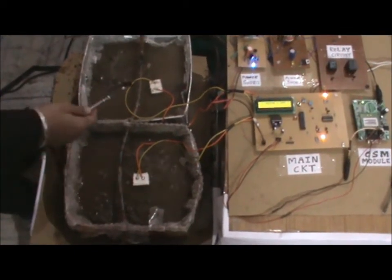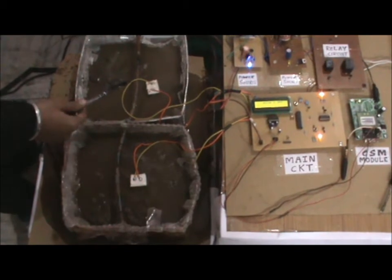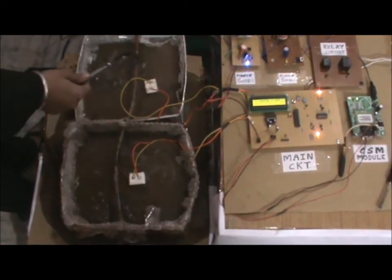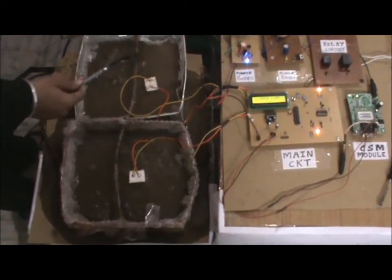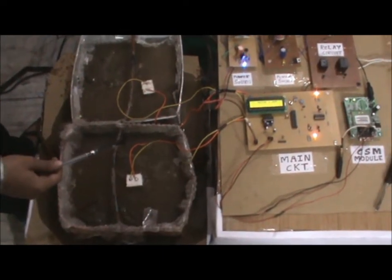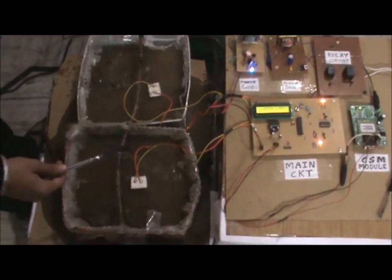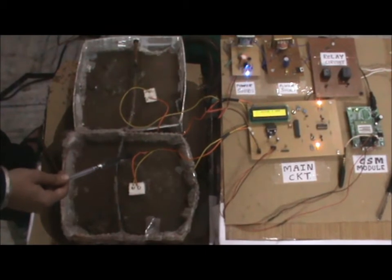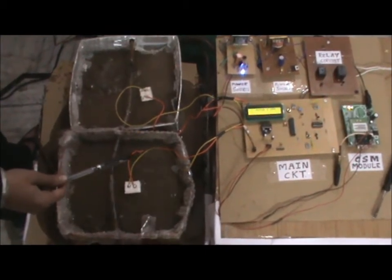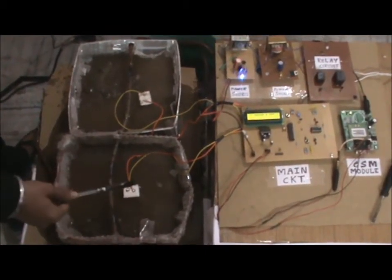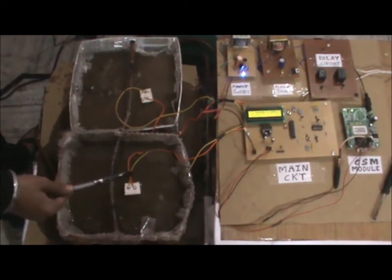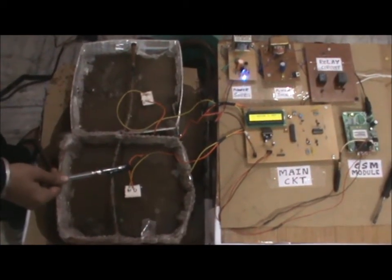Now, since the humidity level of first farm has reached 80%, the motor automatically turns off. Now, the humidity of second farm also reaches 80%, so now both the motors have turned off.